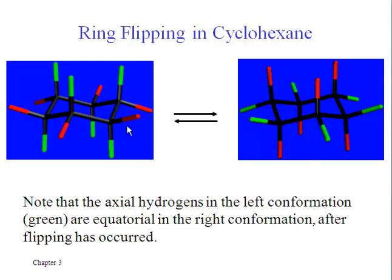And the ability of cyclohexane to do this becomes important when we replace any of the hydrogens with any other substituents. Because as we'll see there's a preference for such substituents to be in an equatorial position rather than axial.